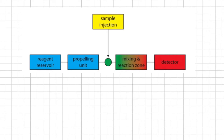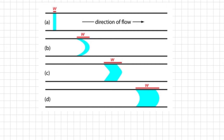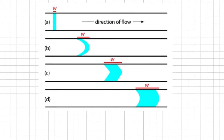This diagram explains the effect of dispersion on the shape of the sample's flow profile at different times during flow injection analysis. When we first inject a sample into the carrier stream, it has a rectangular flow profile of width W. As the sample moves through the mixing and reaction zone, the width of its flow profile increases as the sample disperses into the carrier stream. This dispersion results from two processes: convection, which is due to the flow of the carrier stream, and diffusion, due to the concentration gradient between the sample and the carrier stream.